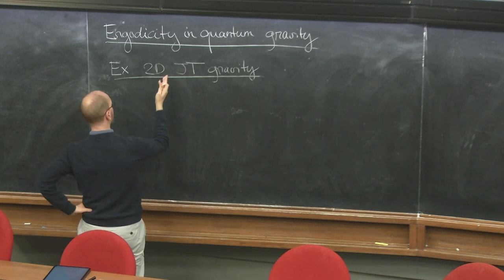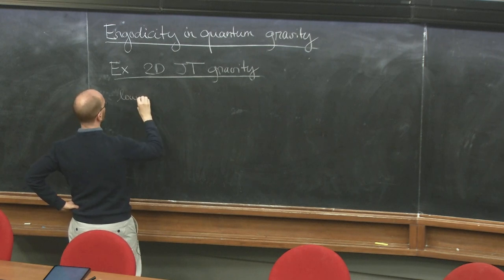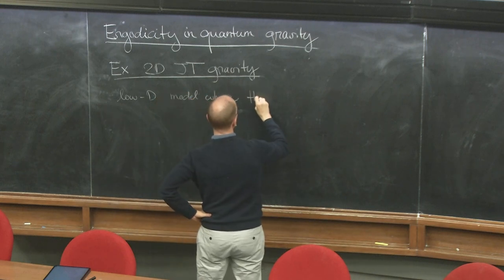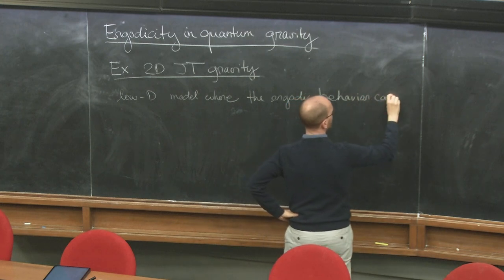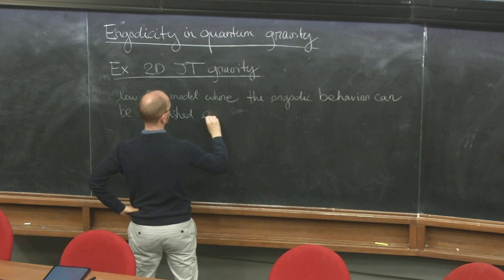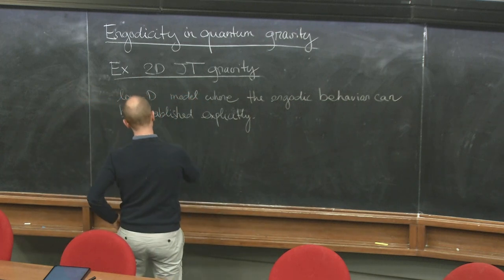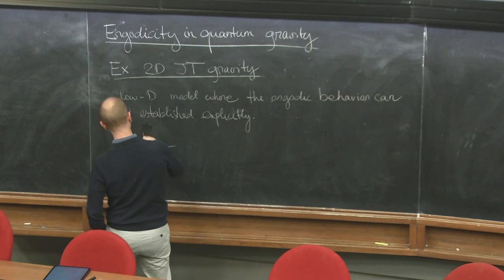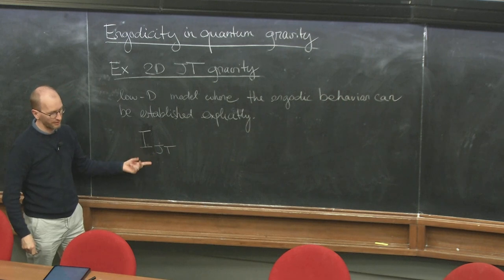This is a low-dimensional model — obviously it's in two dimensions — where the ergodic behavior can be established explicitly. To define it, it's quite useful to write down the action. I'll call it I, because I will later also introduce an object I'll call S_JT, which will be the spectral curve.